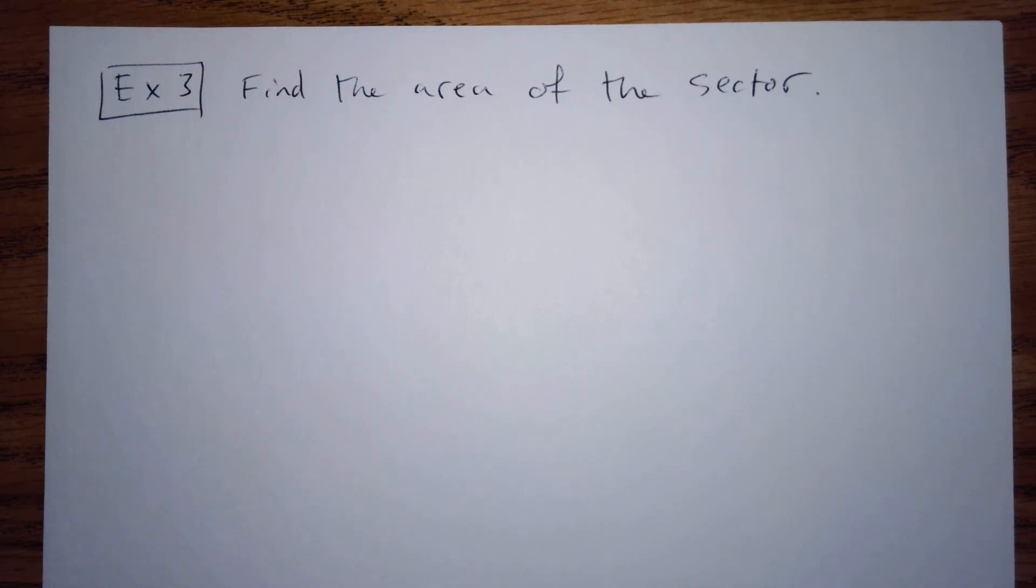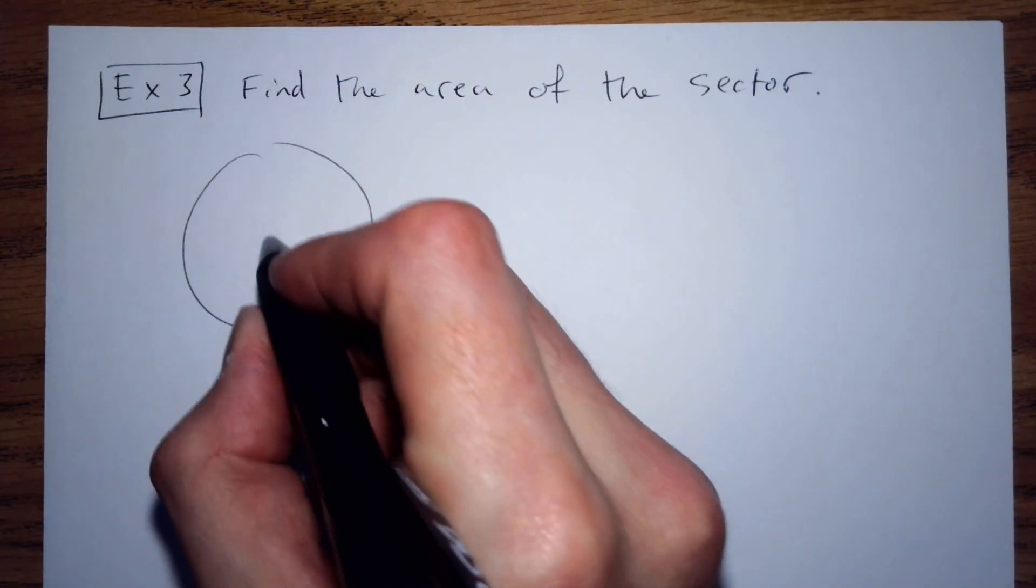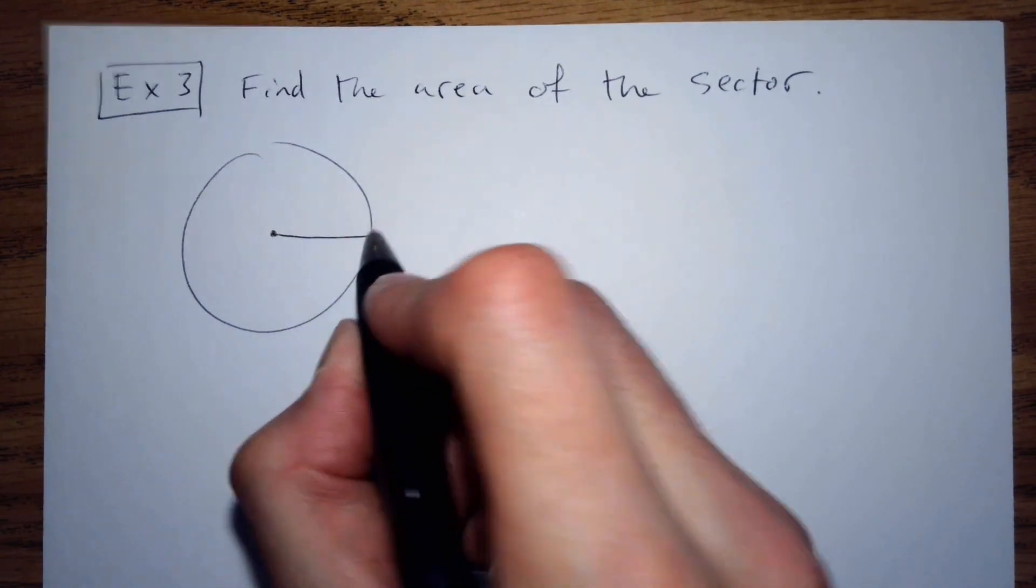I'm going to draw it, but we're finding the area of a sector. So here I have a circle with a little pizza slice.